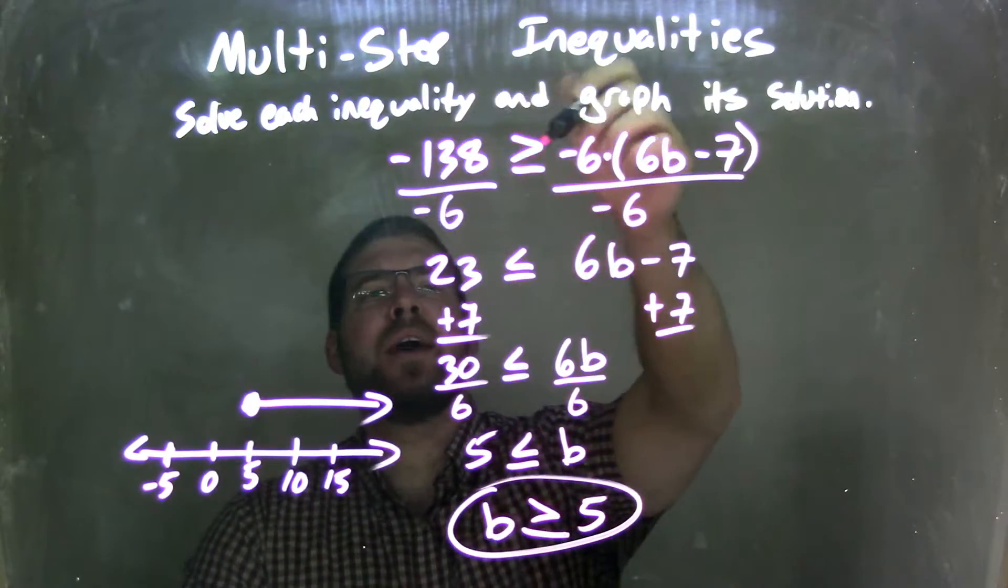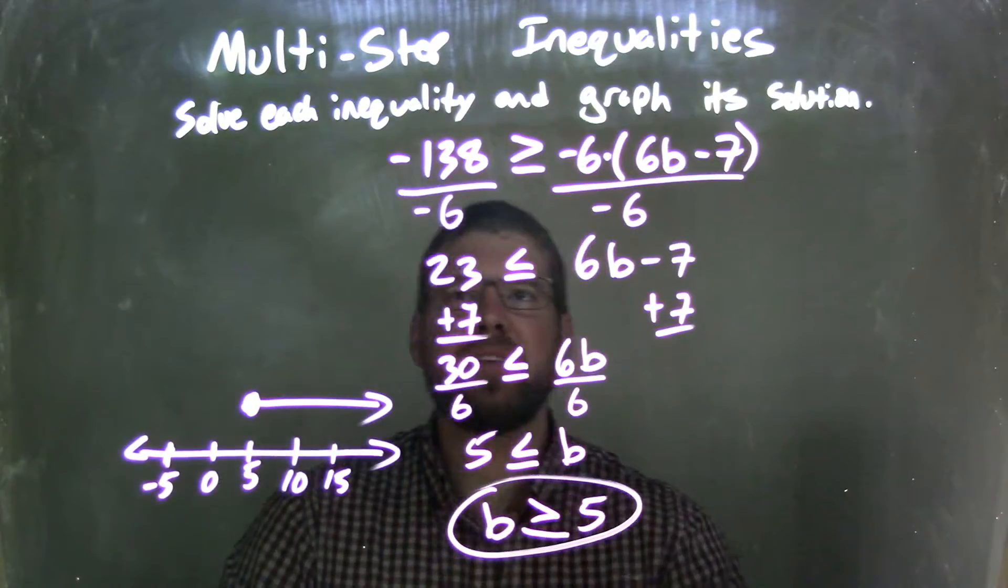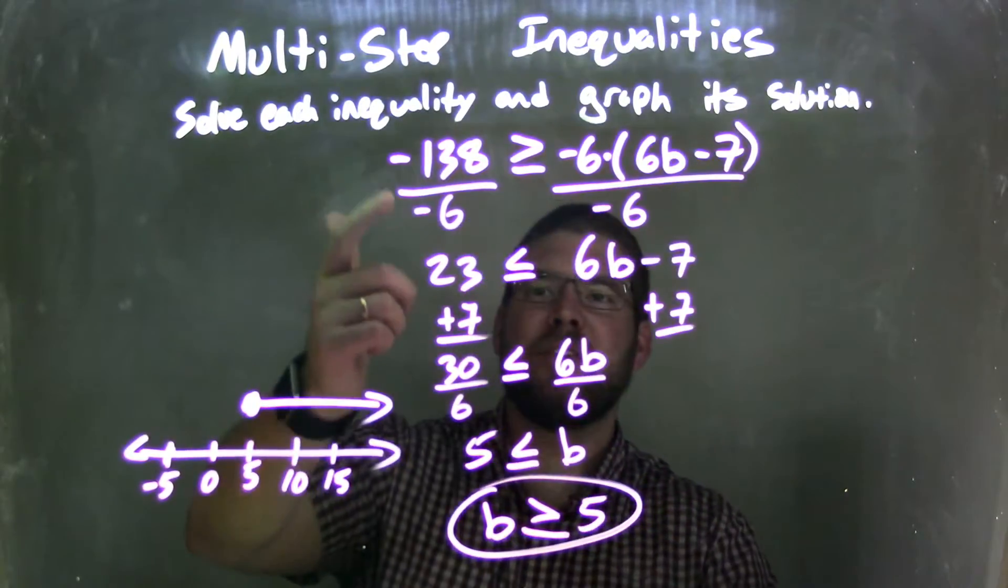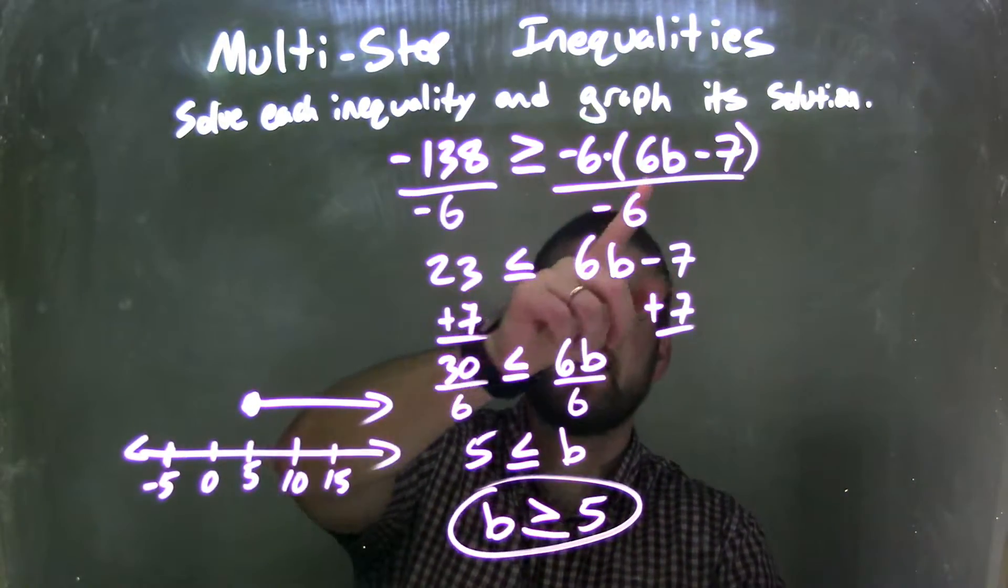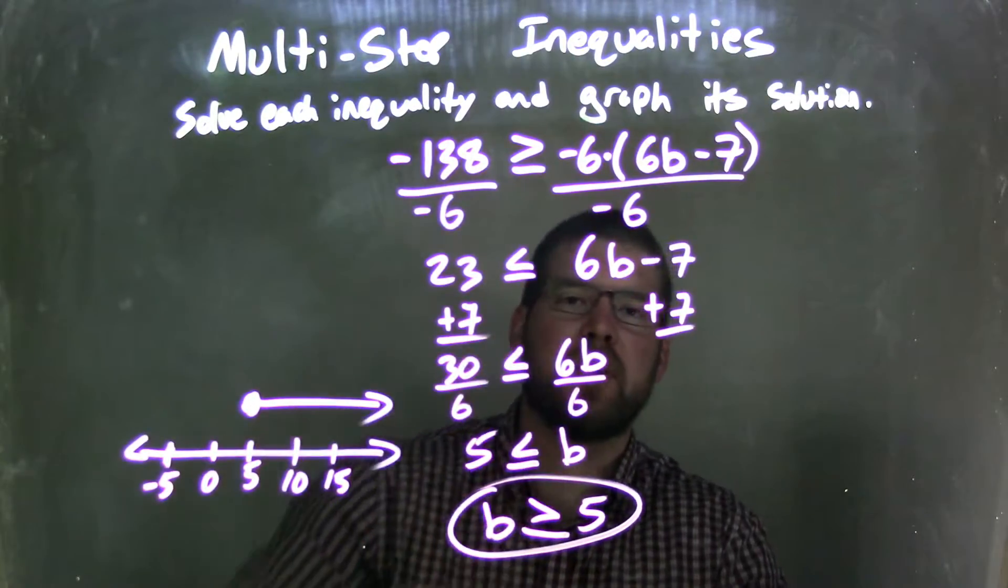We have negative 138 is greater than or equal to negative 6 times 6b minus 7. I divided by negative 6 to both sides, giving me negative 138 divided by negative 6 to be a positive 23. Negative divided by negative is positive. And then since I divided by a negative over the inequality, the inequality needs to flip to be a less than or equal to sign.